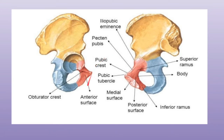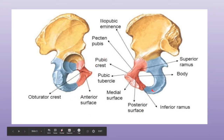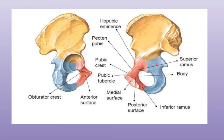The third surface is the pelvic surface of the ischium, which is the smooth inner or medial surface that forms part of the lateral wall of the true pelvis. The ramus of the ischium forms the conjoined ischiopubic rami with the pubis bone in front of it.